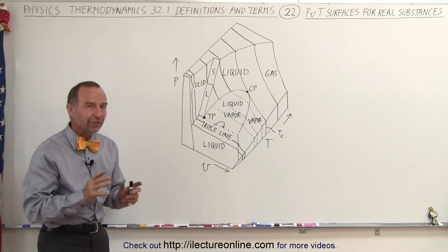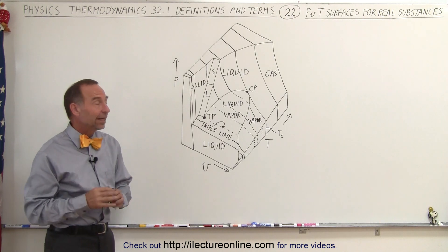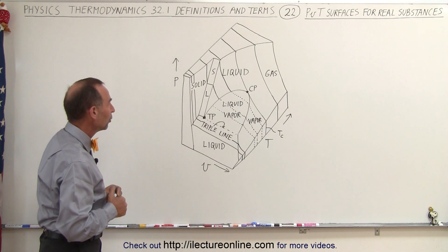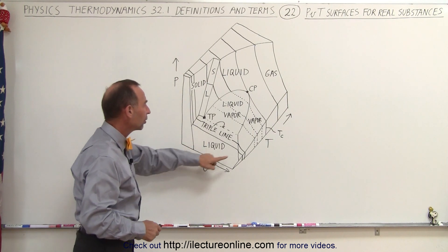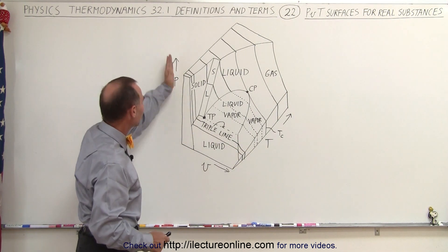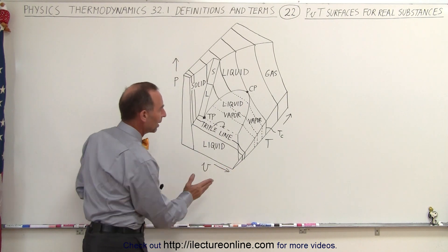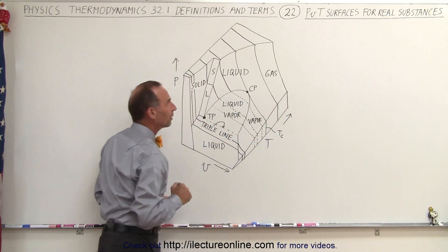Let's get a feel for this diagram because it does give us quite a bit of information. Notice we have all three state variables: pressure, volume, and temperature. Pressure increases going this way, volume increases going this way, and temperature increases going this way.